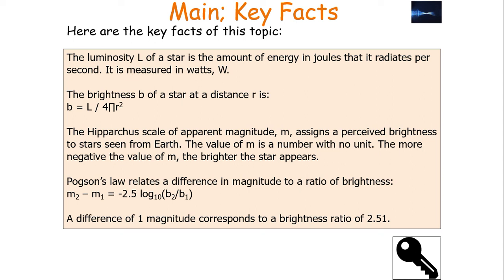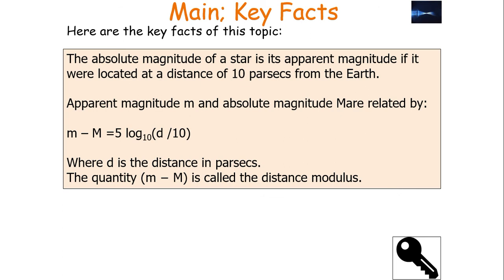Here are the key facts. The luminosity L of a star is the energy it radiates per second, measured in watts. The brightness at distance r is given by luminosity over 4πr². The apparent magnitude scale assigns a perceived brightness to stars as seen from Earth — small m has no unit, and the more negative the value, the brighter the star appears. Pogson's law relates a difference of one magnitude to a brightness ratio of 2.51. The absolute magnitude is the apparent magnitude if the star were at 10 parsecs, and is related to apparent magnitude by small m minus big M equals 5 log₁₀(d/10), where small m minus big M is called the distance modulus.